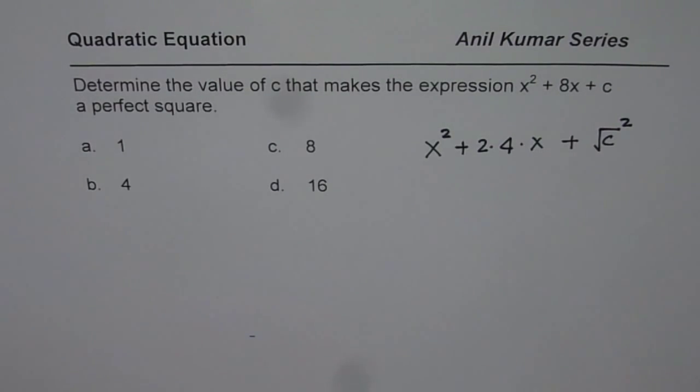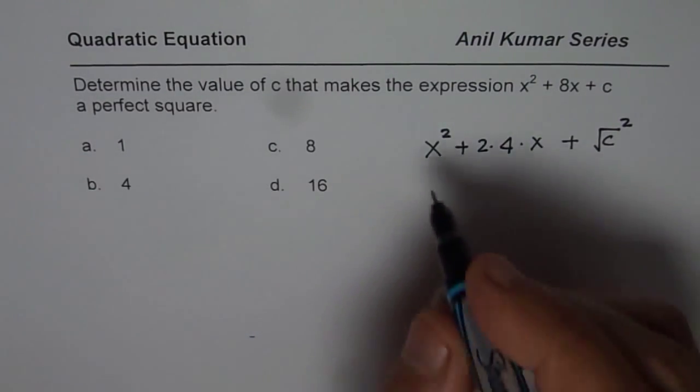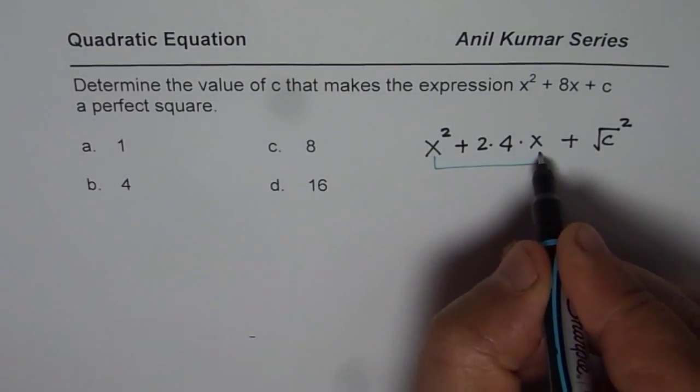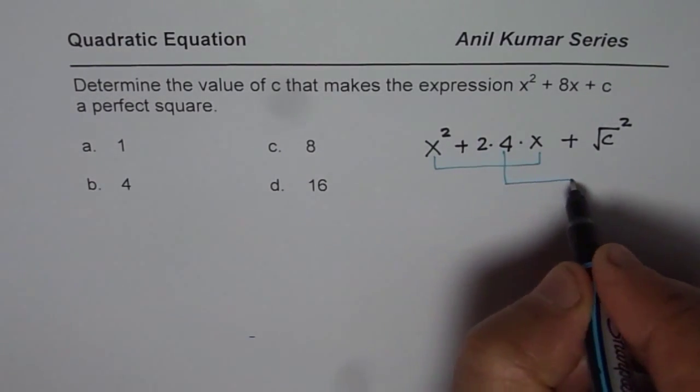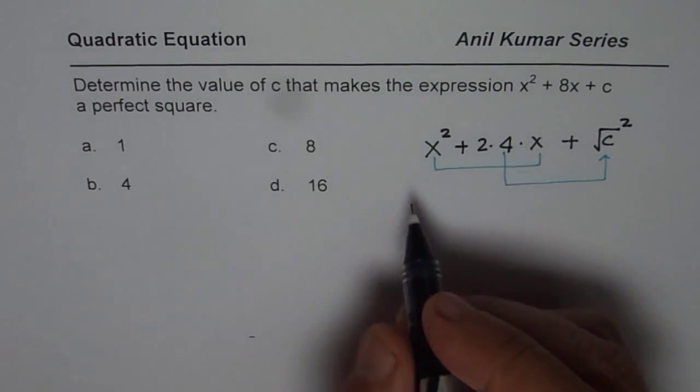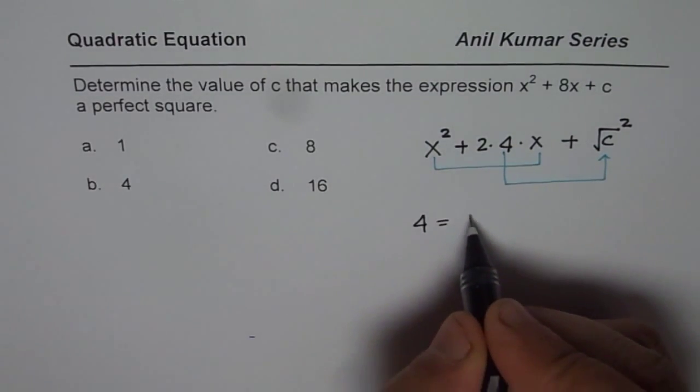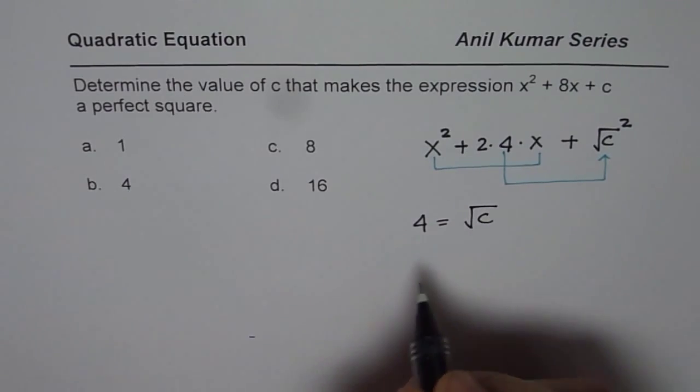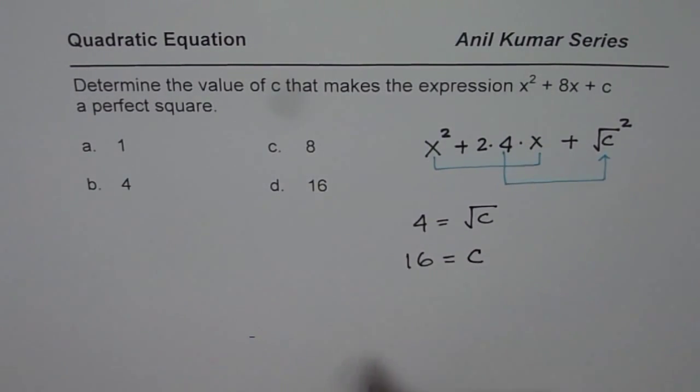Now when you compare the terms you know x is already there right and this 4 is actually related with square root of C. Correct? So now you should write 4 equals to square root of C or when you square both sides you get 16 as equal to C.